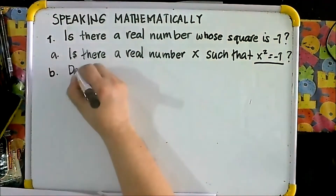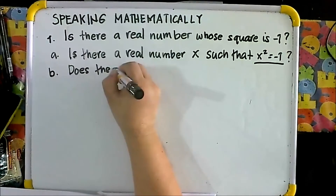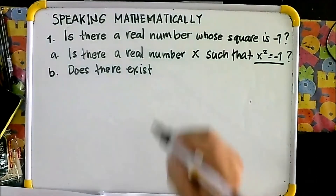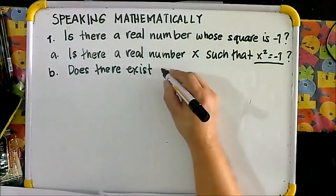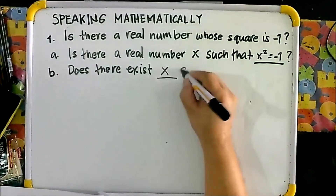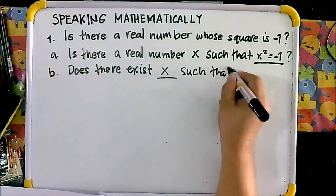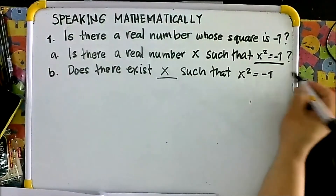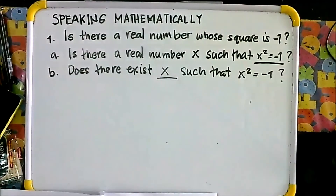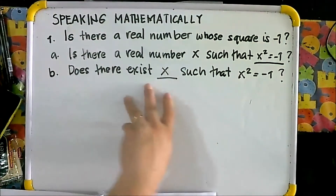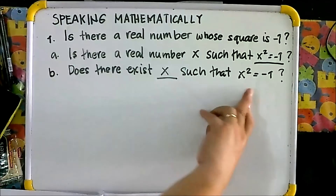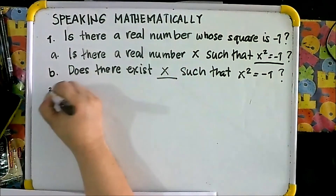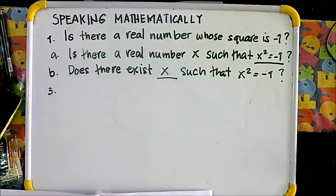For letter B: does there exist a real number X such that X squared equals negative 1? That is your answer. Okay, next is number 3 — let's answer the odd numbers.